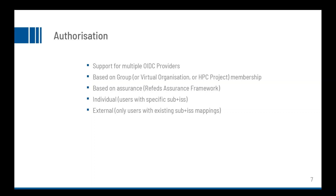In addition, you can base the authorization on Assurance — for example, on the REFEDS Assurance framework — which gives you the possibility to request a certain identity quality of a user. You can also authorize individual users by specifying their subject and issuer, or use external plugins that check if an existing subject and issuer maps to a local Unix user.